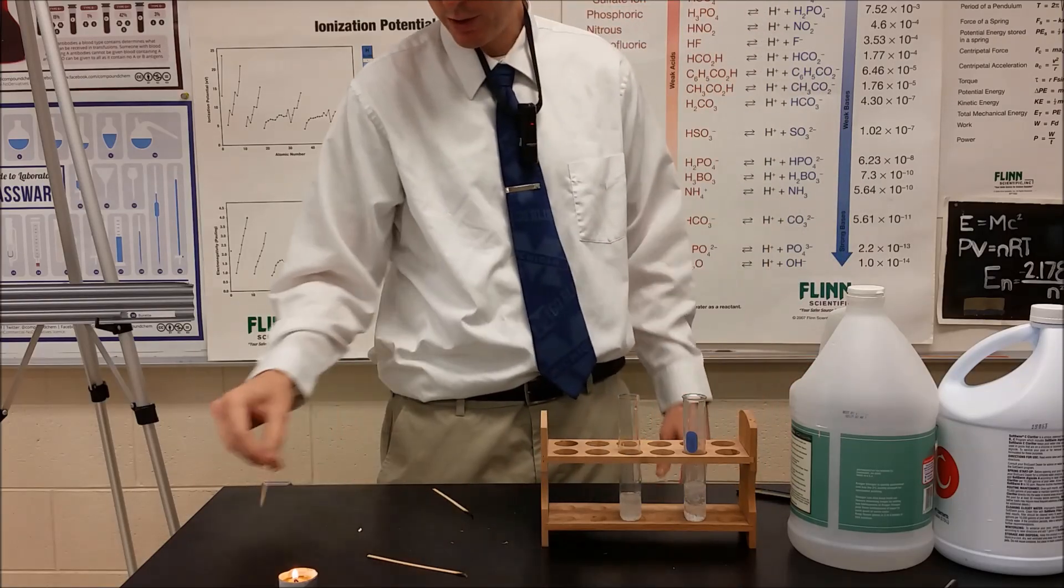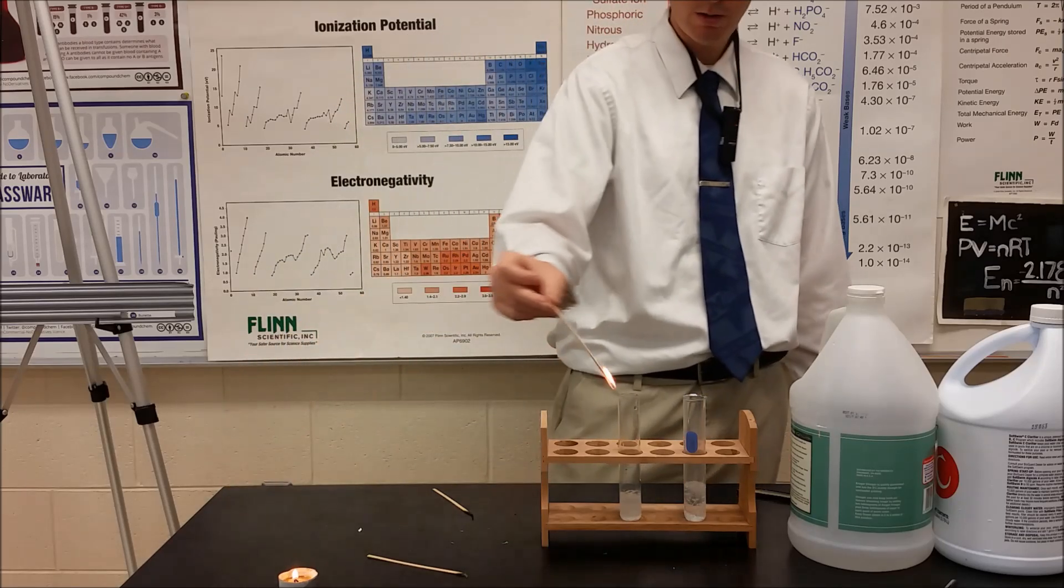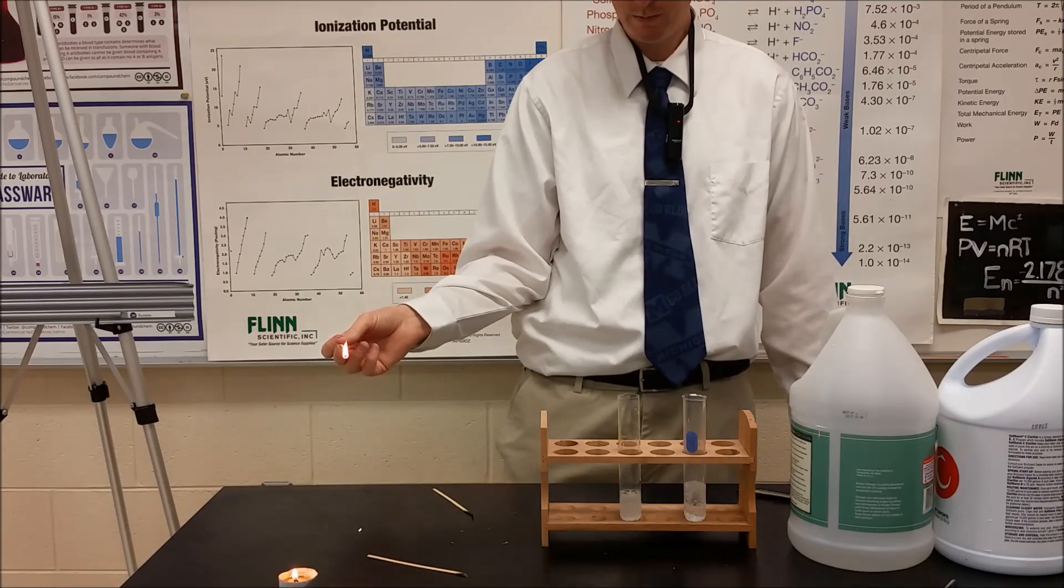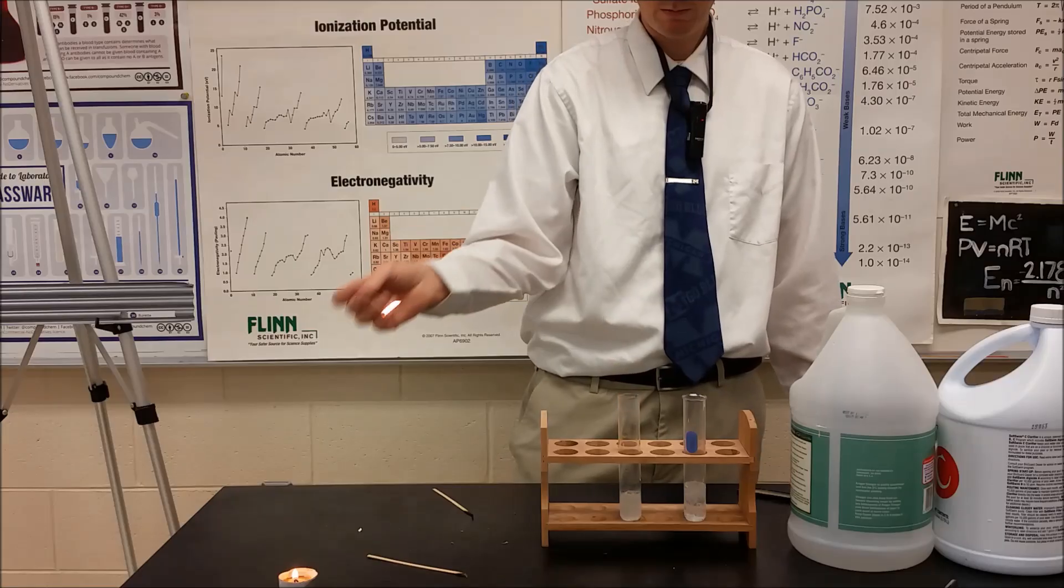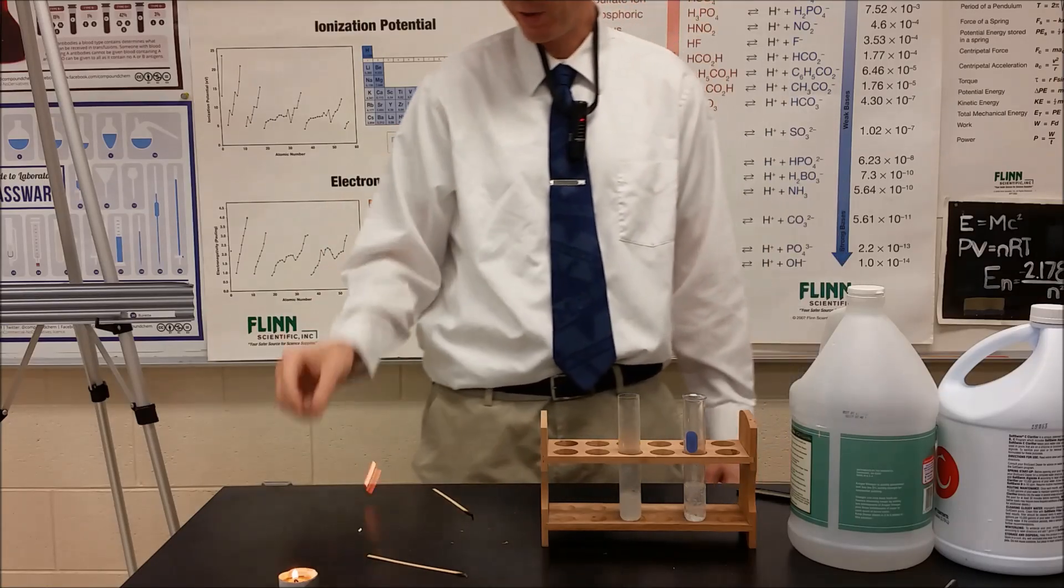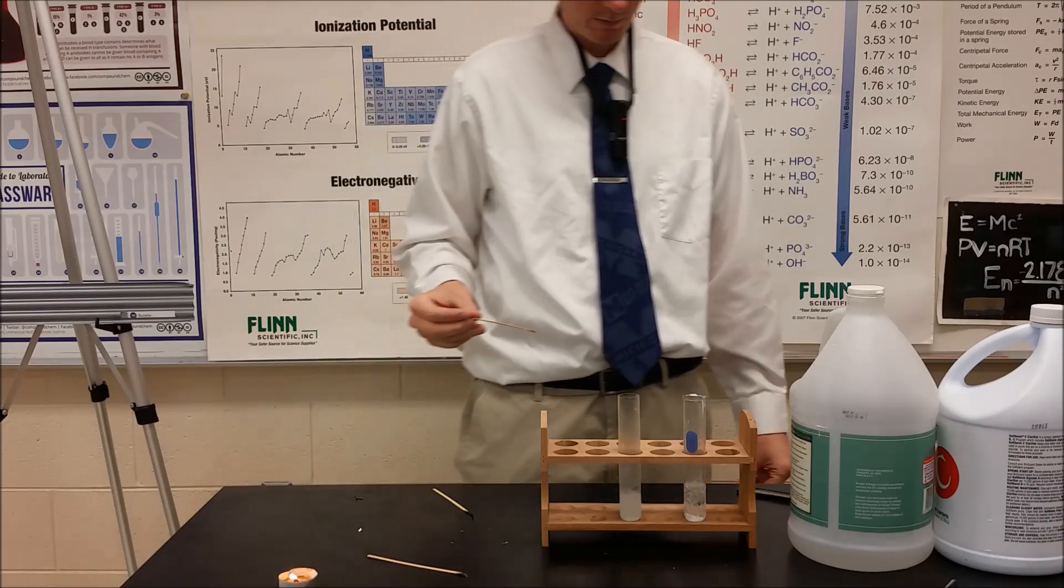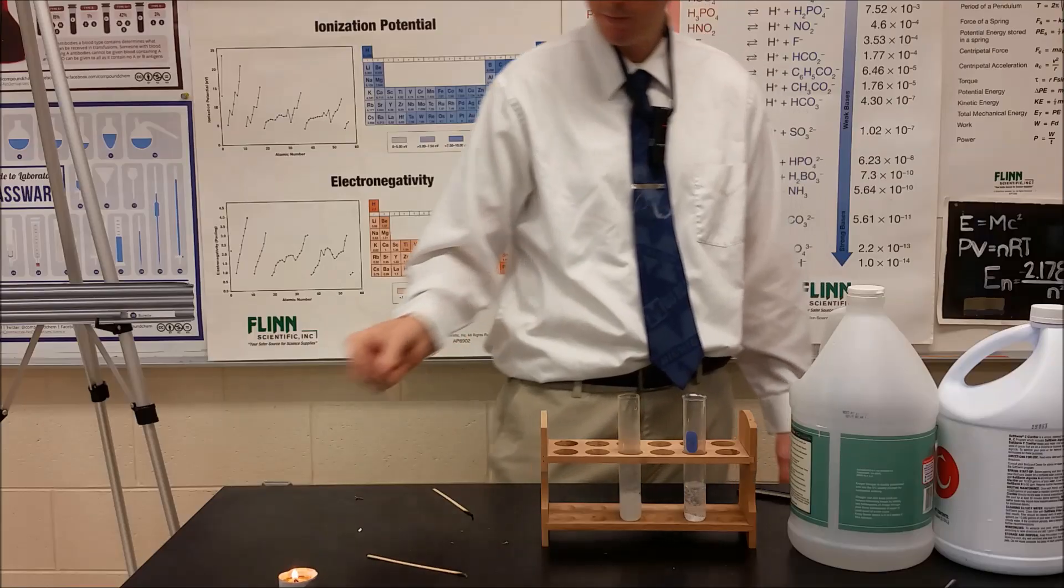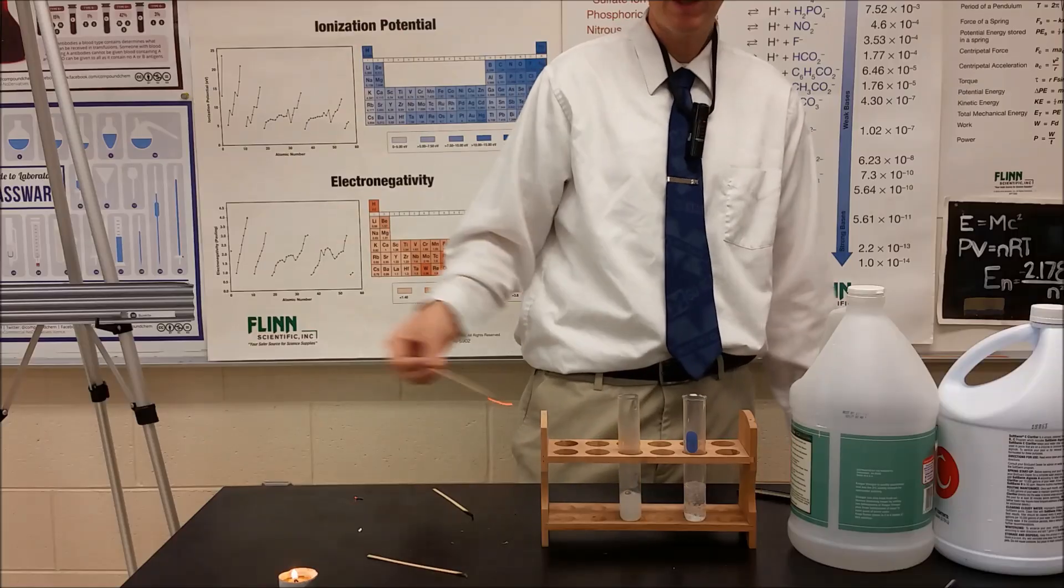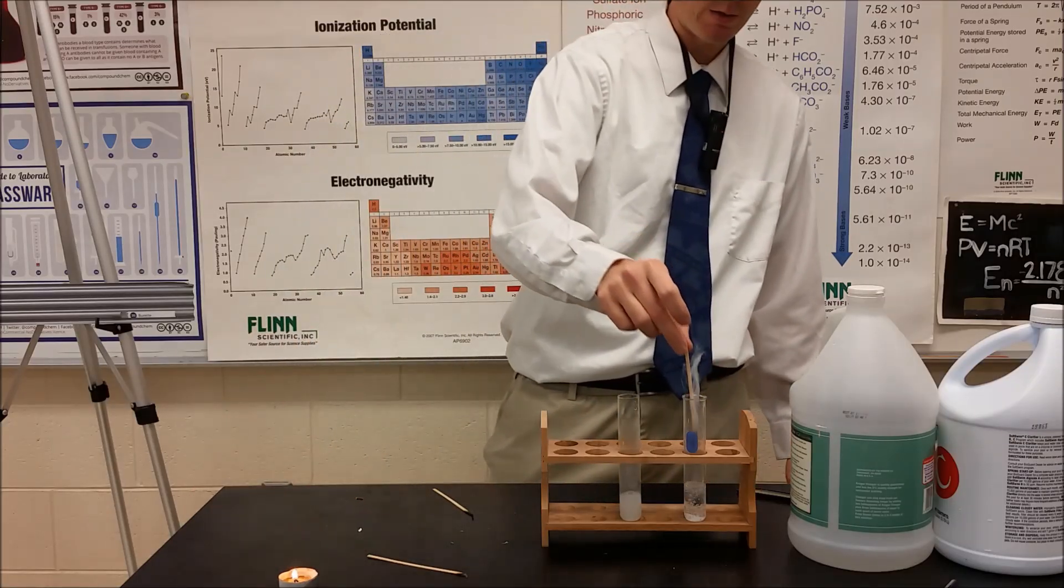So to do the test for hydrogen, just like the other ones, take a flaming splint and put it into the container. It's not ready yet. We get a quick little yelp. Let that build up a little more, we'll try again. There we go. And of course, carbon dioxide is still over here.